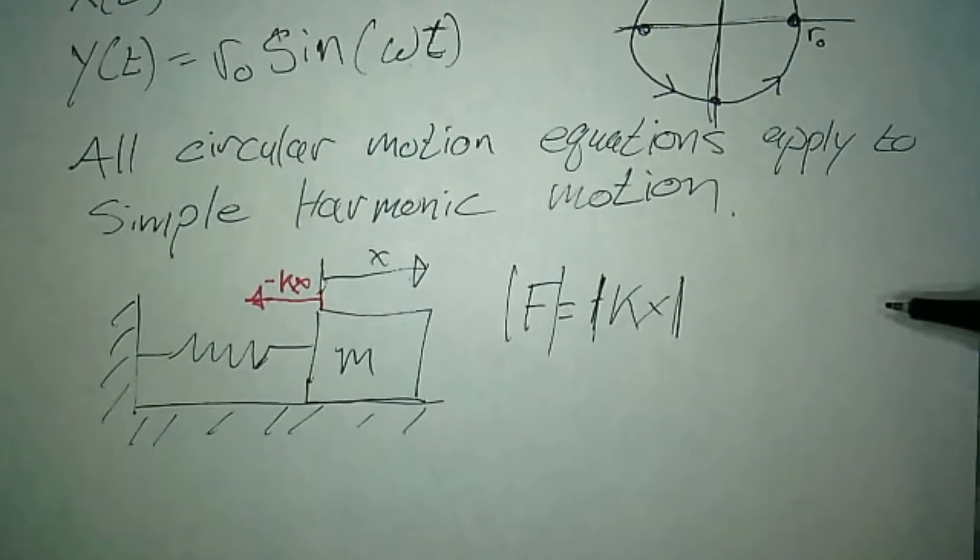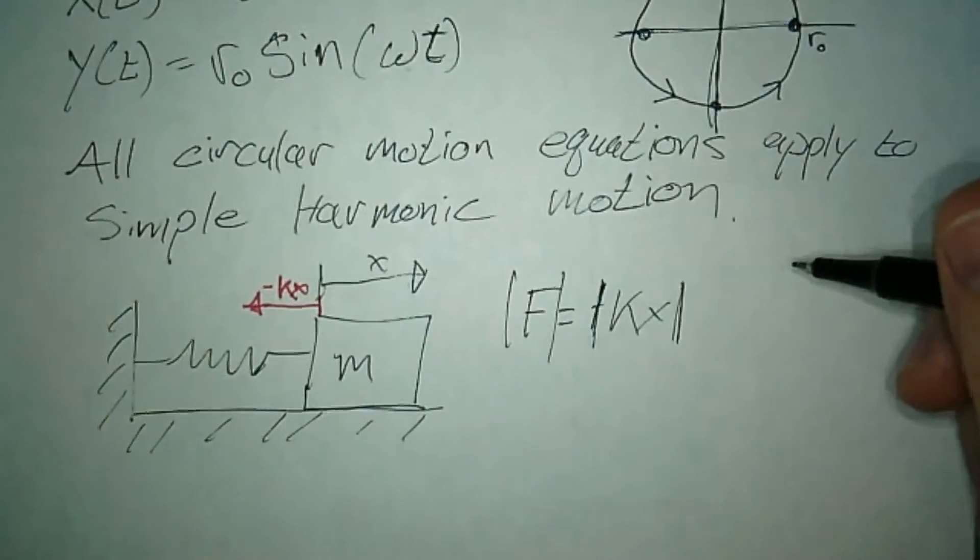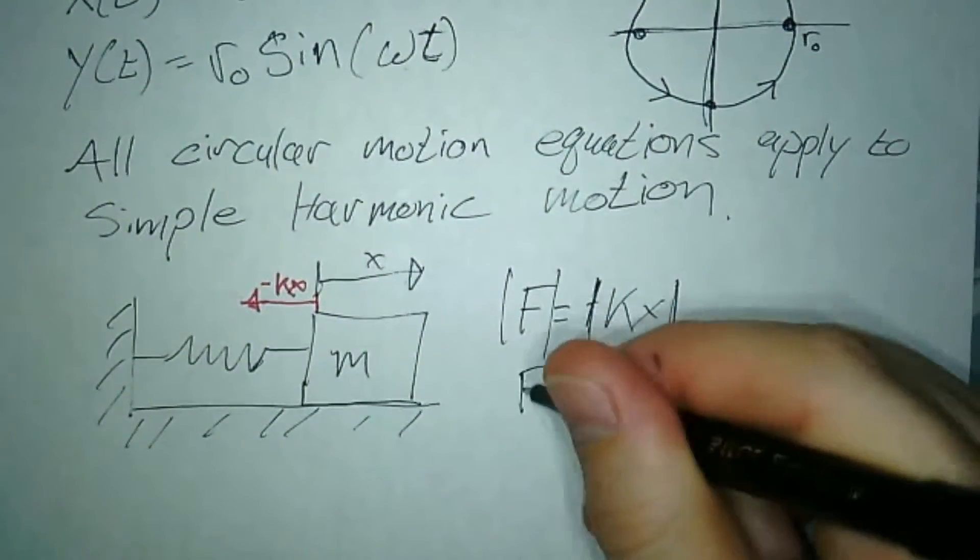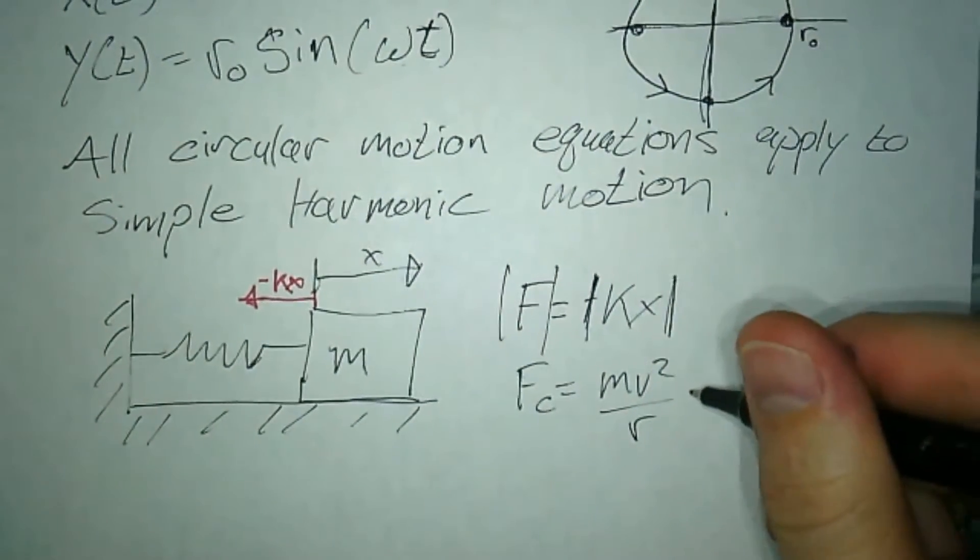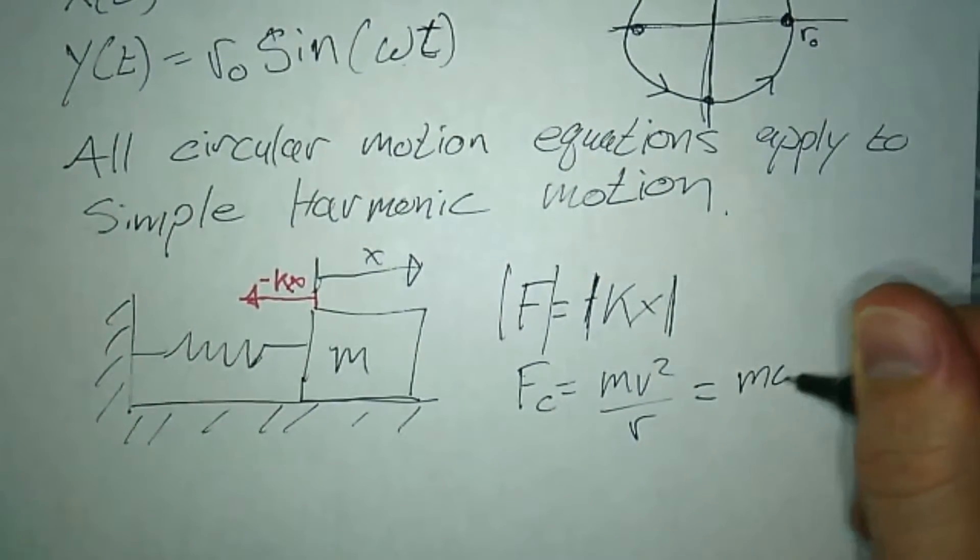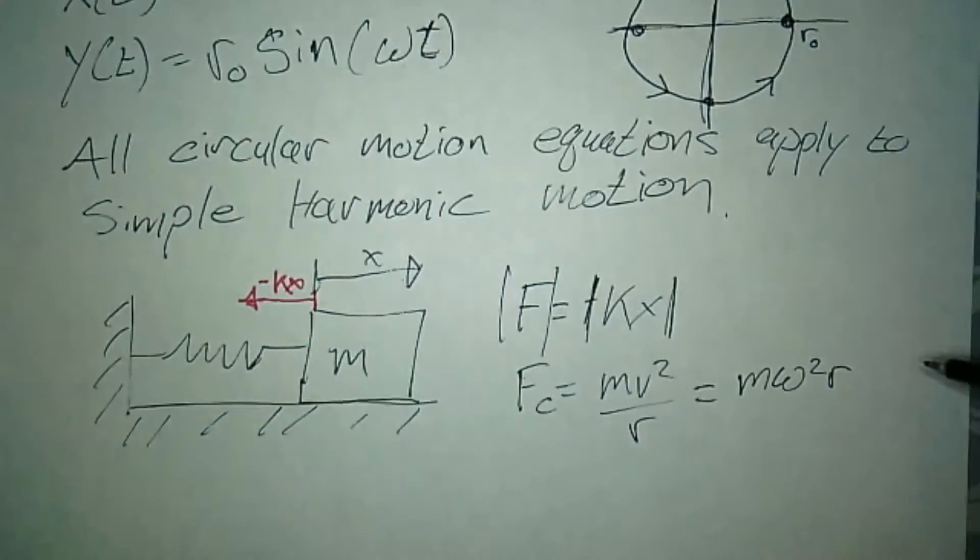What is that equal to in circular motion? I could either say centripetal force equals mv²/r, which is probably more common, but another one you've seen which is more important now is F = mω²r.